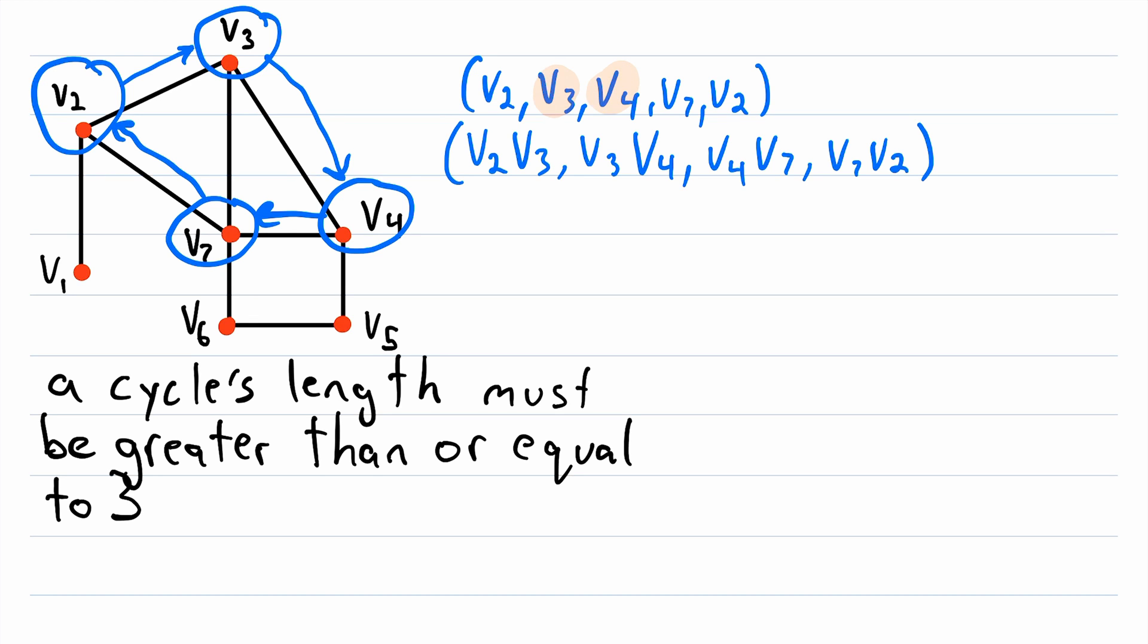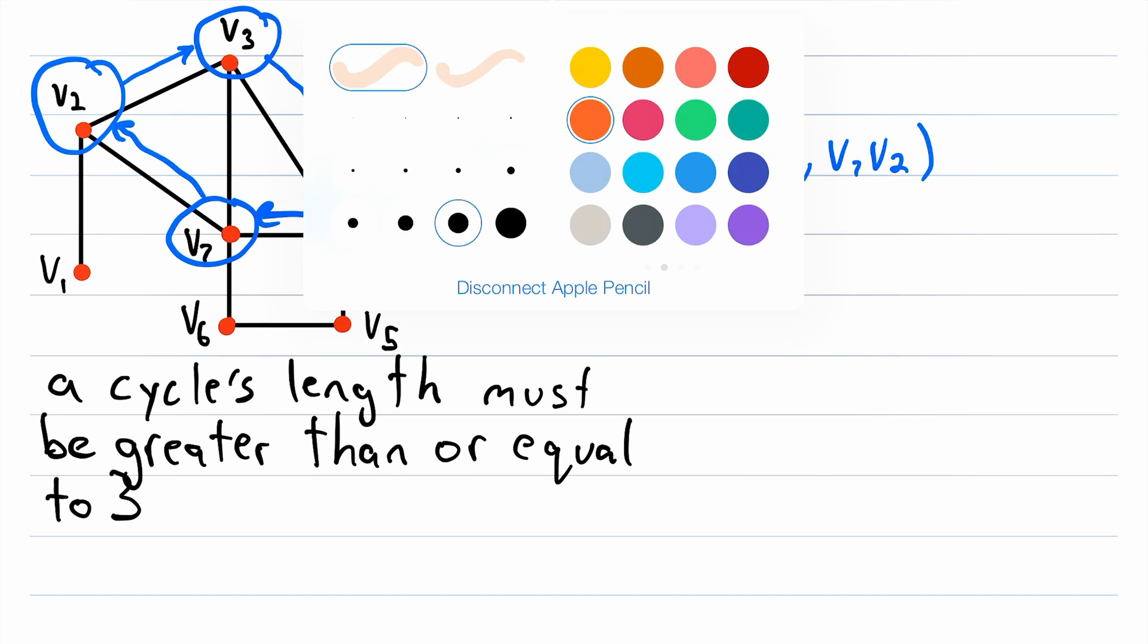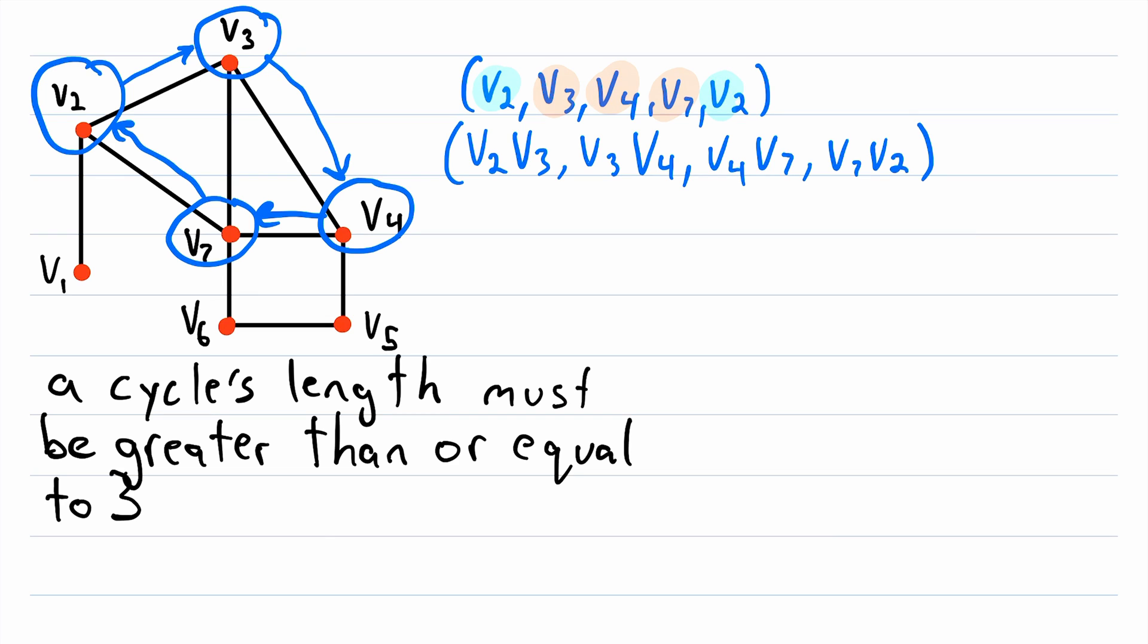Remember that we said in a cycle no vertices can be repeated except the first and the last vertex which are required to be the same. This also implies that no edge can be traversed more than once, but there is a slightly different definition of cycle that is sometimes used that says you still can't repeat edges, but you can repeat vertices.